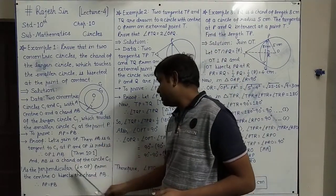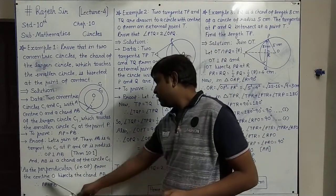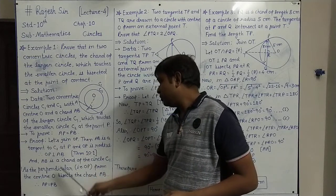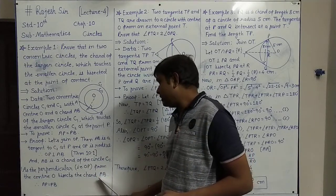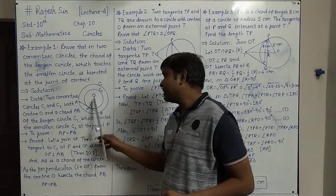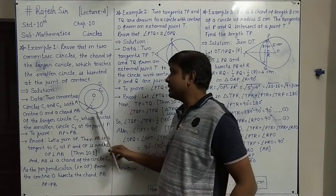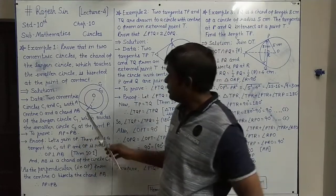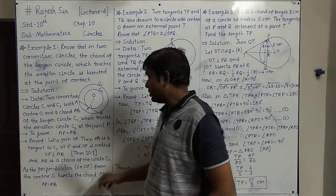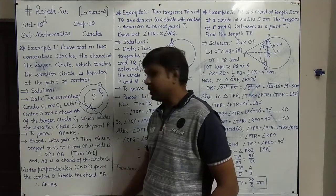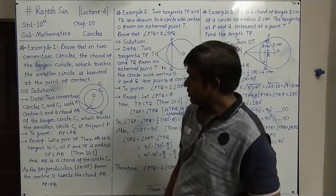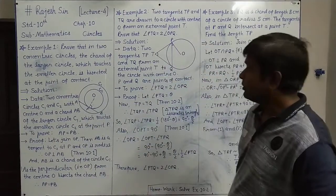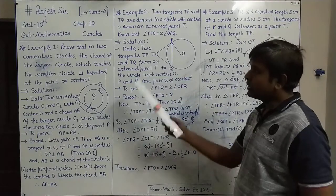Therefore, OP is perpendicular from center to chord AB, so it bisects AB. That means AP equals PB. This is the simple proof for Example 1.